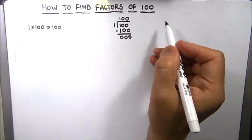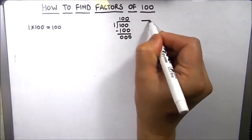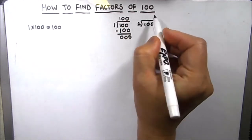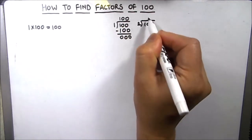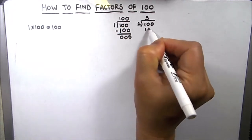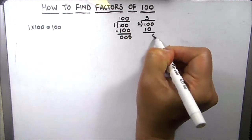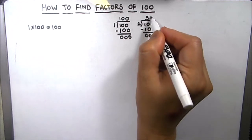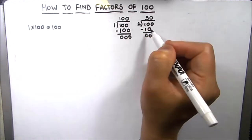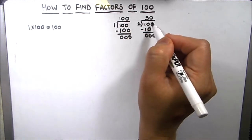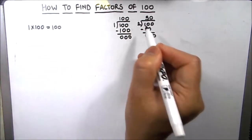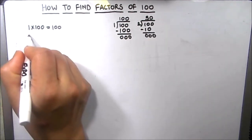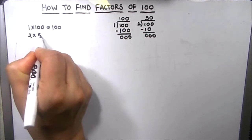Next we will divide 100 by number 2. 2 times 5 is 10 and 2 times 0 is 0, so 2 is a factor of 100. We got two factors from this division: 2 and 50. So 2 times 50 is 100.